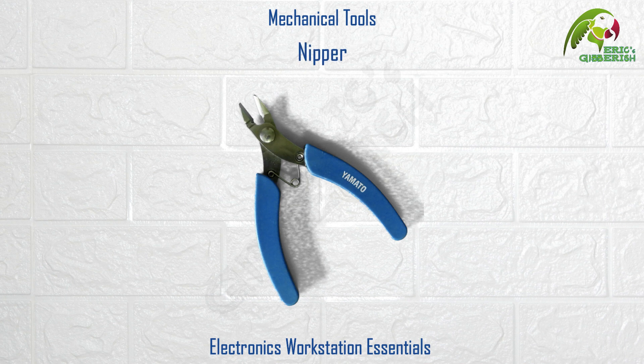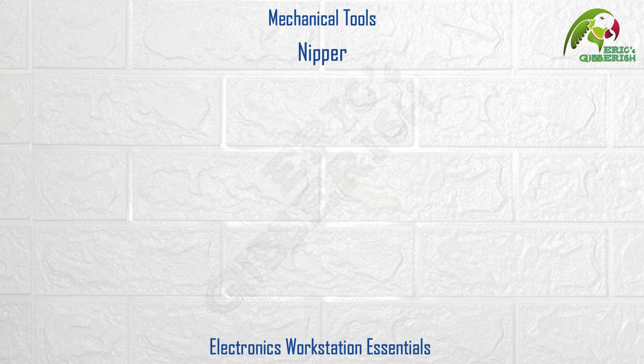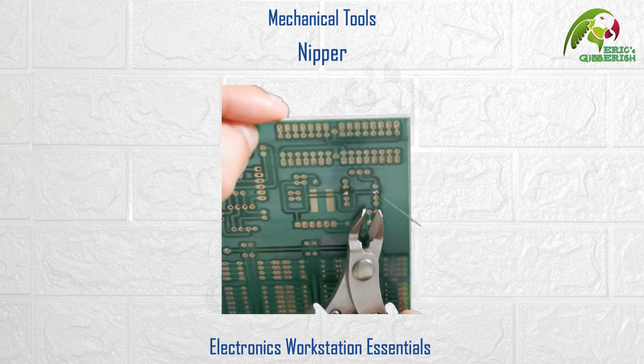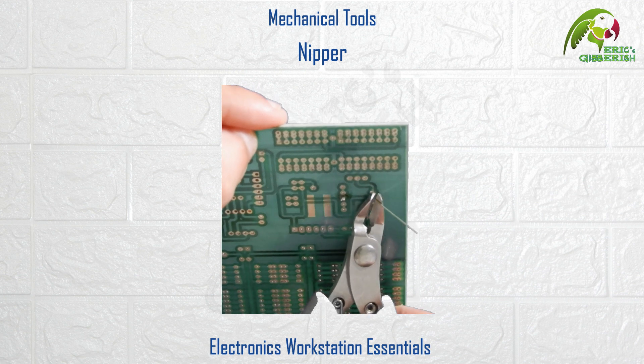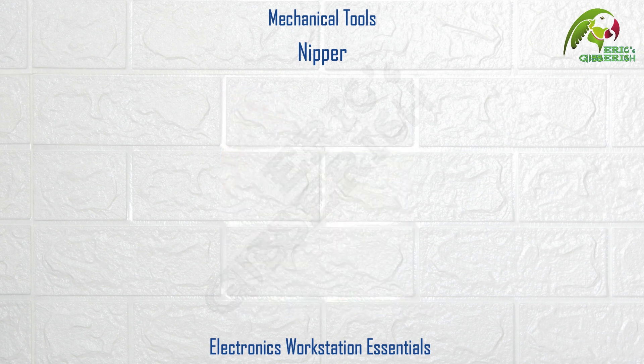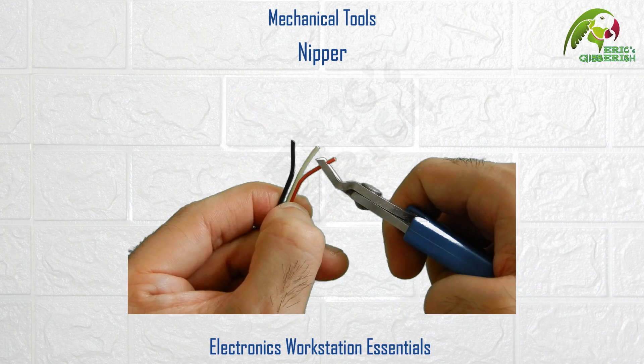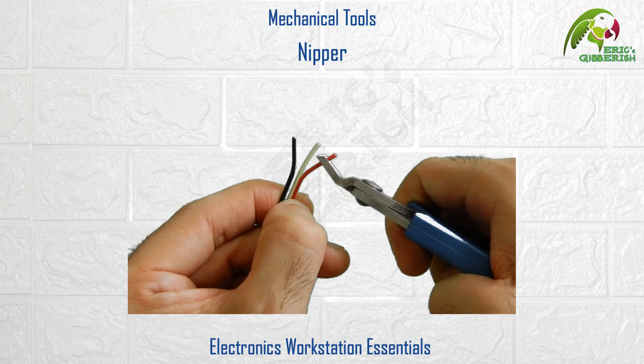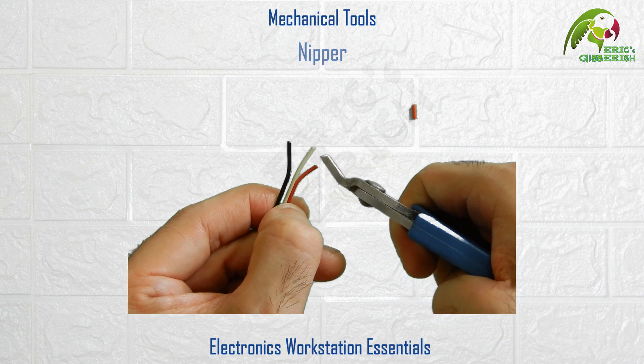Nipper. A cutter useful for lighter works like cutting the leads of through-hole components, particularly after soldering them on PCBs, or for cutting very thin or delicate wires.